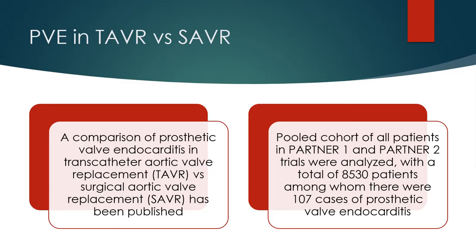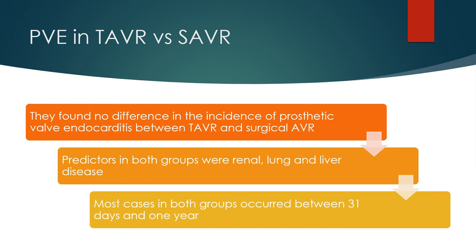A comparison of prosthetic valve endocarditis in transcatheter aortic valve replacement versus surgical aortic valve replacement has been published. A pooled cohort of all patients in the PARTNER 1 and PARTNER 2 trials was analysed, with a total of 8,530 patients, among whom there were 107 cases of prosthetic valve endocarditis. They found no difference in the incidence of prosthetic valve endocarditis between TAVR and surgical AVR.